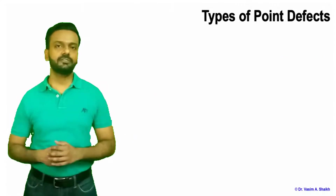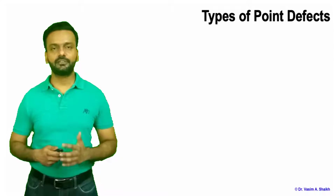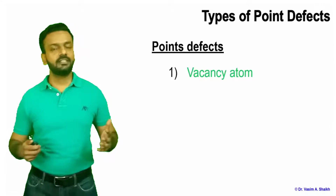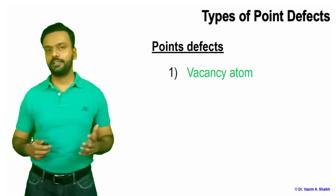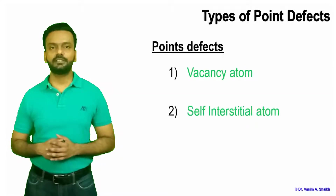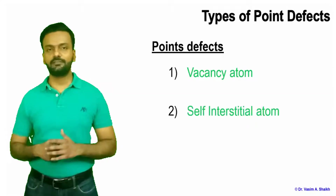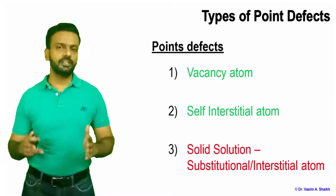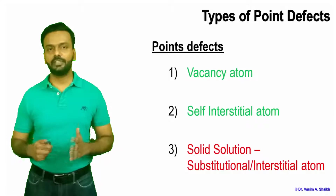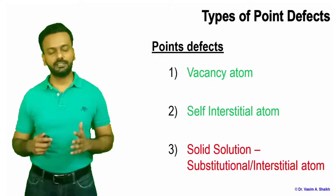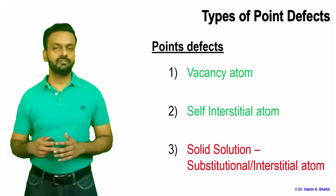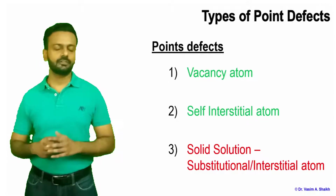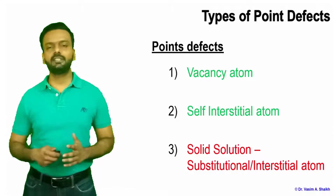Now let us see the different types of point defects. The first is the vacancy atom, the second is the interstitial atom — specifically the self-interstitial atom — and the third is the solid solution. In today's lecture we will only deal with vacancy atom and self-interstitial atom. The next video will cover solid solutions. Let us start with vacancy atom.